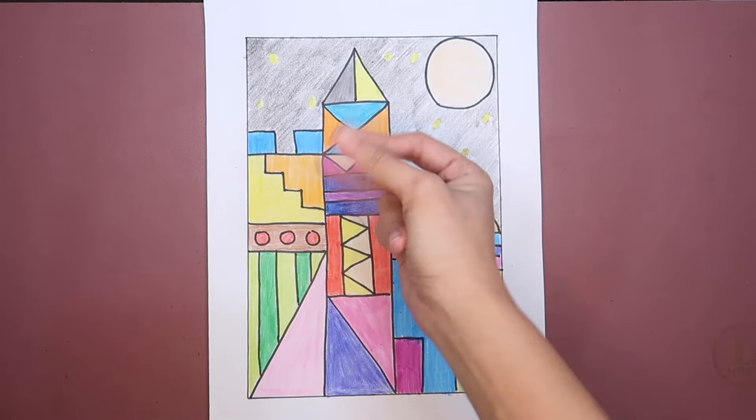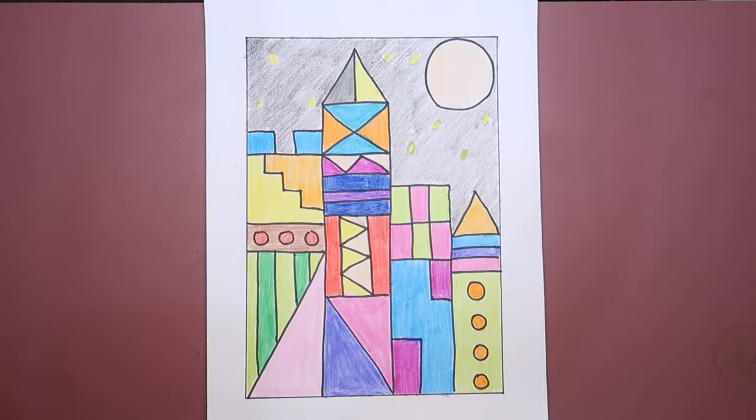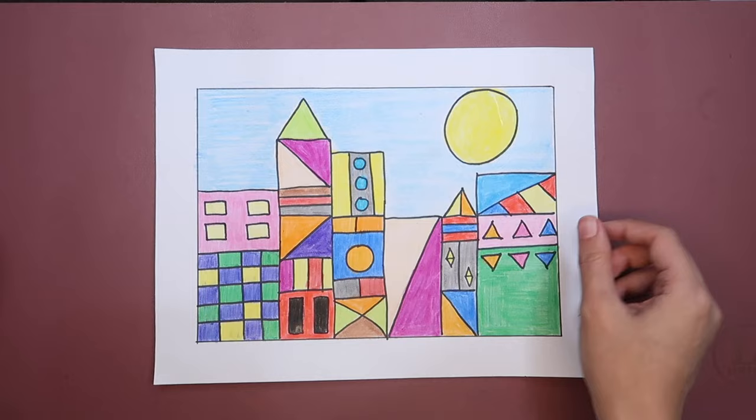Here's an example of a Paul Klee-inspired village in a portrait position. Here's another one in a landscape position. It's up to you if you want it in portrait or landscape. As long as you fill the whole paper with shapes.